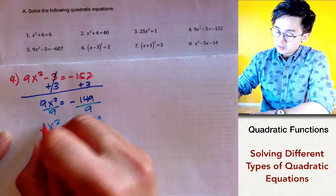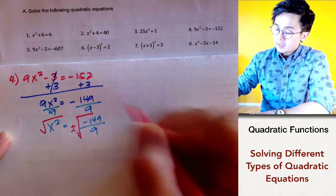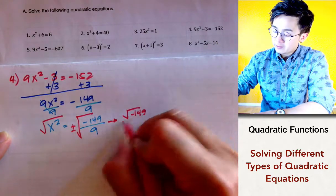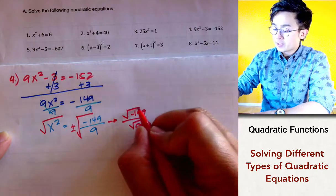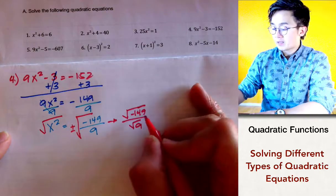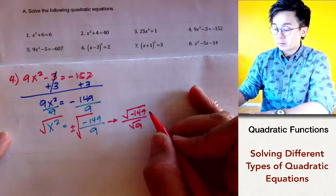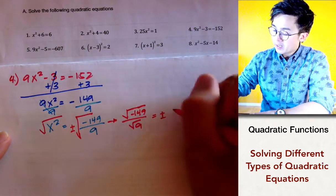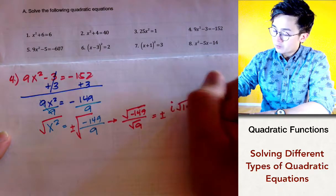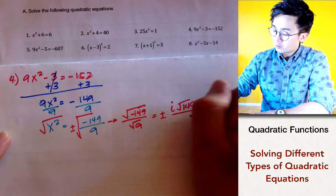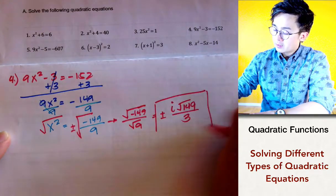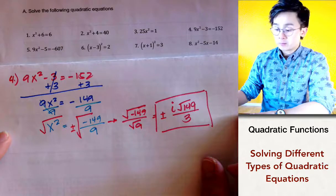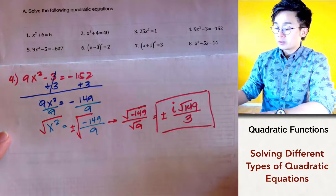Taking the square root of both sides and separating them, we get the square root of negative 149 over the square root of 9. The square root of 9 is 3, and the square root of a negative number is an imaginary number. Since 149 is not a perfect square, we end up with plus or minus i times the square root of 149, all over 3. This is a complex root solution for problem number four.